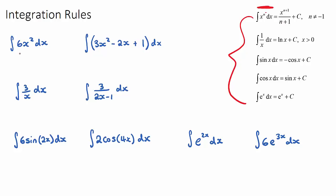So this will be 6x cubed over 3, and then we add our plus c constant. We can simplify the six and the three to just be two, so the answer will be 2x cubed plus c.